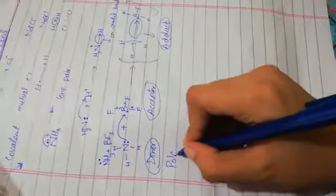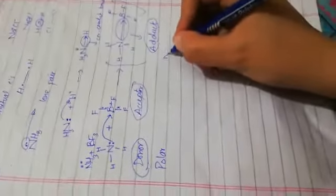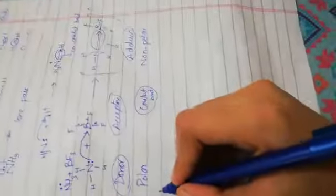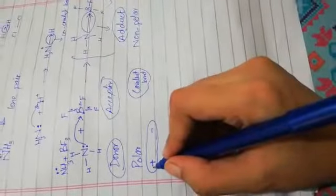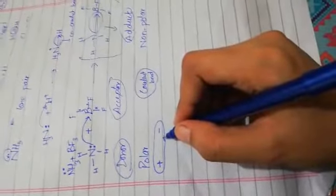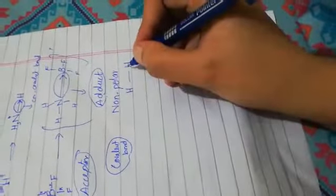Now we will discuss the difference between polar covalent bond and non-polar covalent bond. A covalent bond involves mutual sharing of electrons. Polar means having two poles — positive and negative. Positive comes from the atom with a deficiency of electrons, negative from the atom with excess electrons. Non-polar means having no poles — for example between hydrogen and hydrogen, or between Cl and Cl, where no positive or negative charge is shown.